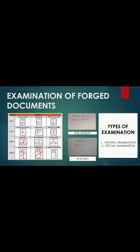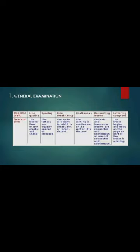The examination of forged documents usually occurs in forensic science under criminal law as evidence. For document examination, there are two types of examination carried out: general examination and special examination. General examination includes handwriting characteristics such as line quality, spacing, letter comparison, pen lift, connecting strokes, slant, and diacritic placement.